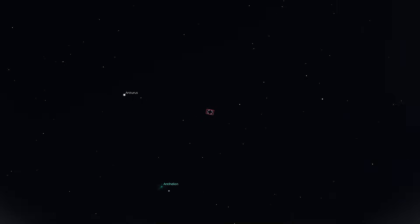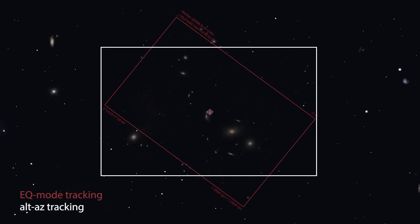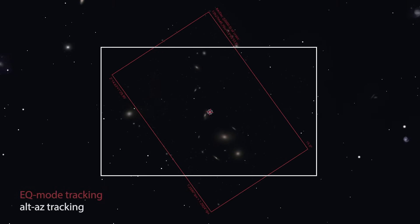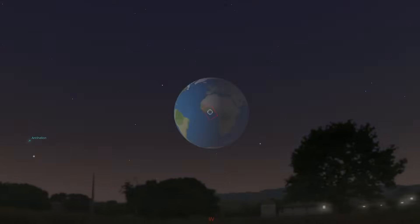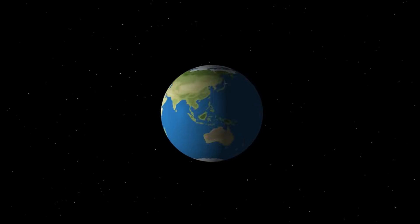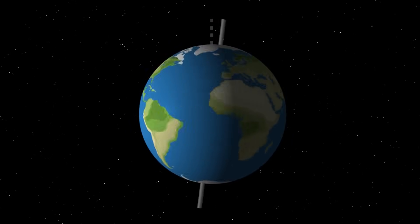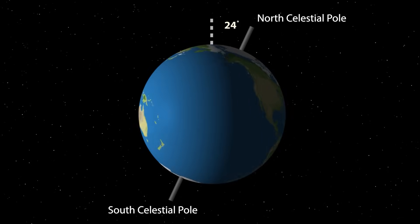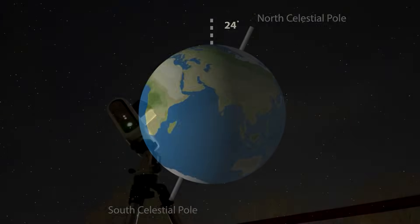Second, as an object moves across the sky from east to south to west, it undergoes rotation causing certain areas of the sky to drift out of the telescope's field of view over time — a phenomenon known as field rotation. To compensate, you can track in EQ mode after aligning your telescope with the north celestial pole if you're in the northern hemisphere, or the south celestial pole if you're in the southern hemisphere.